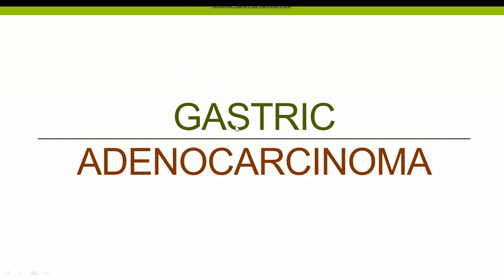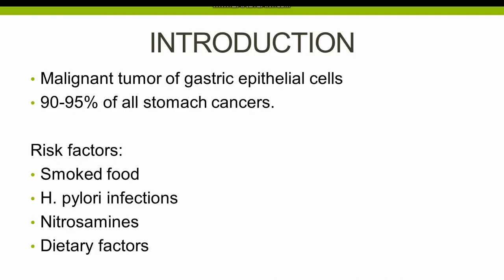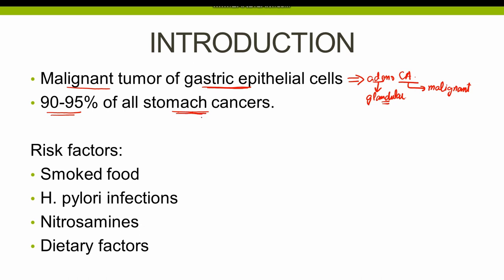The next topic of our discussion is gastric adenocarcinoma. Gastric adenocarcinoma means the malignant tumor of the gastric epithelial cells — adeno means glandular and carcinoma means malignant tumor of epithelial cells. Gastric adenocarcinoma constitutes almost 90–95% of all stomach cancers and it occurs in two main forms: the first is intestinal type carcinoma and the second is infiltrative carcinoma.